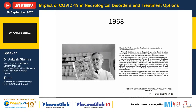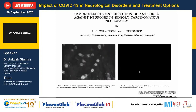During that same decade, in 1965, Wilkinson and colleagues had already described immunofluorescent detection of antibodies against neurons in sensory carcinomatous neuropathy. These three landmark papers ultimately led to the discovery of what we know today as paraneoplastic syndrome.